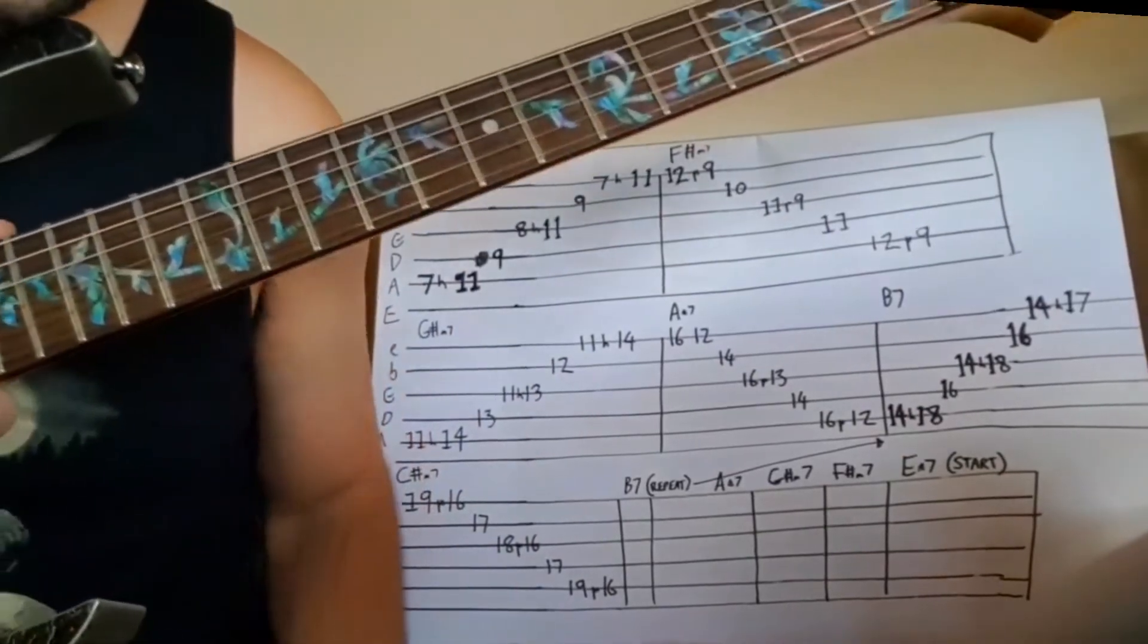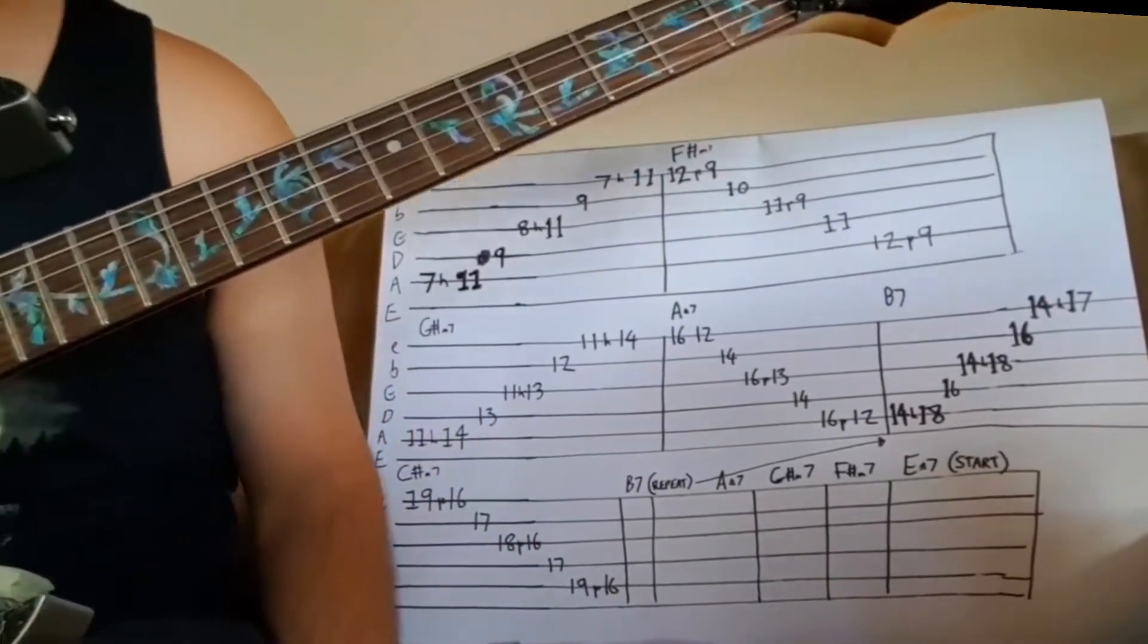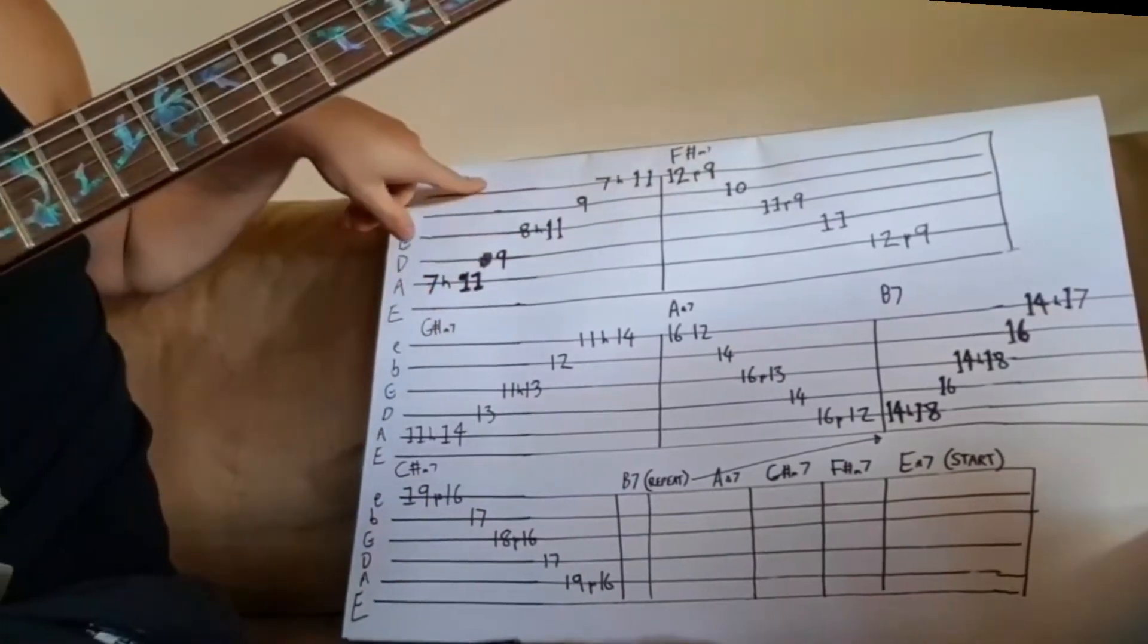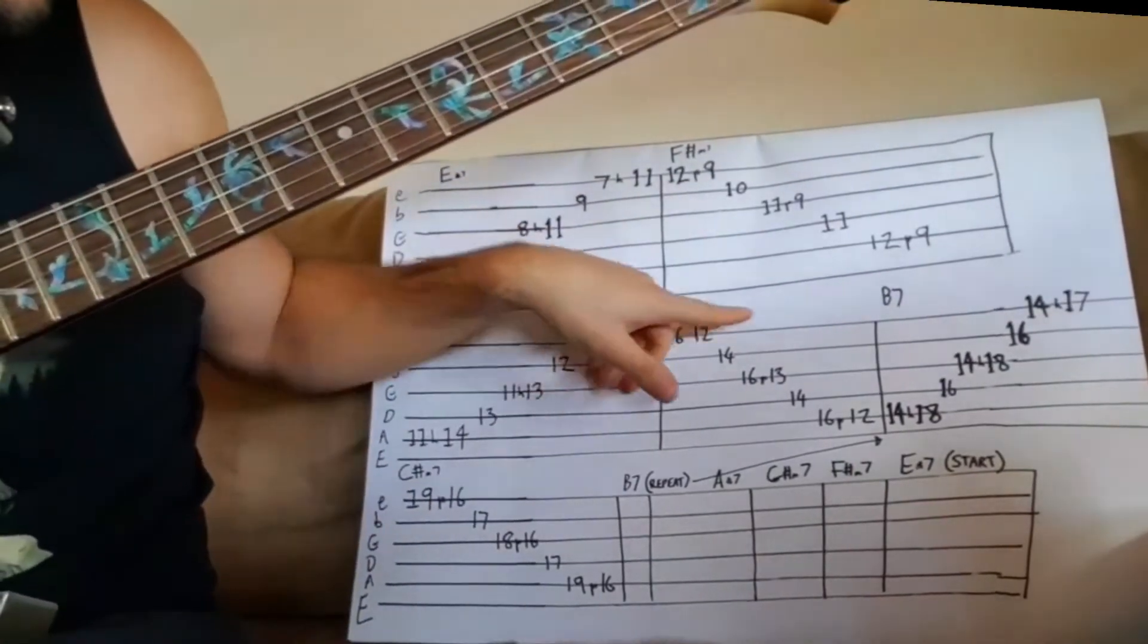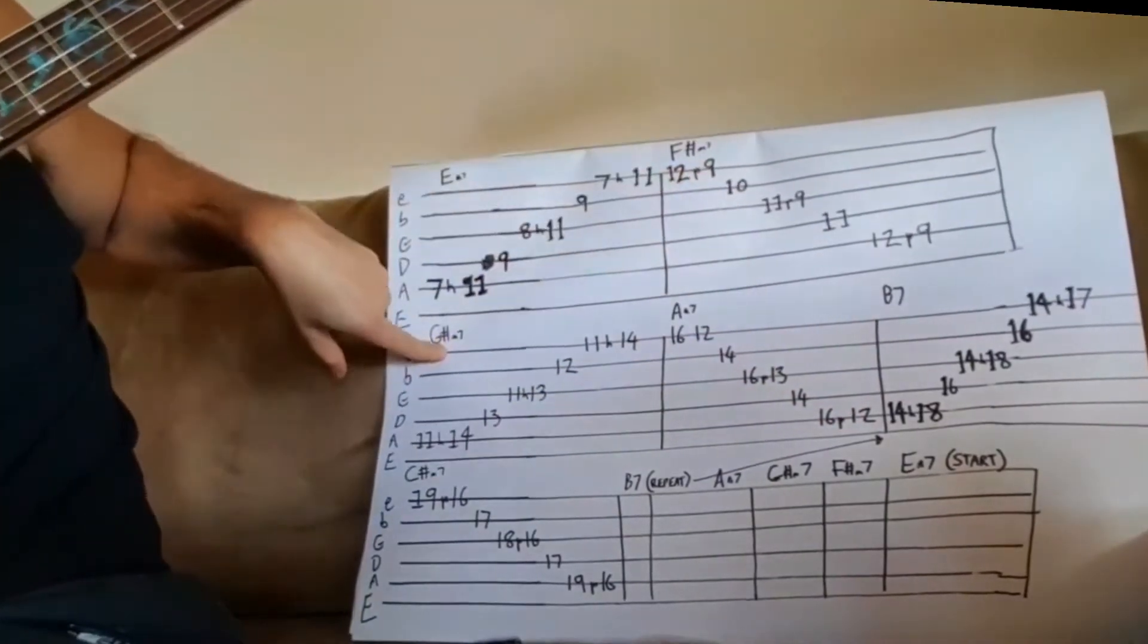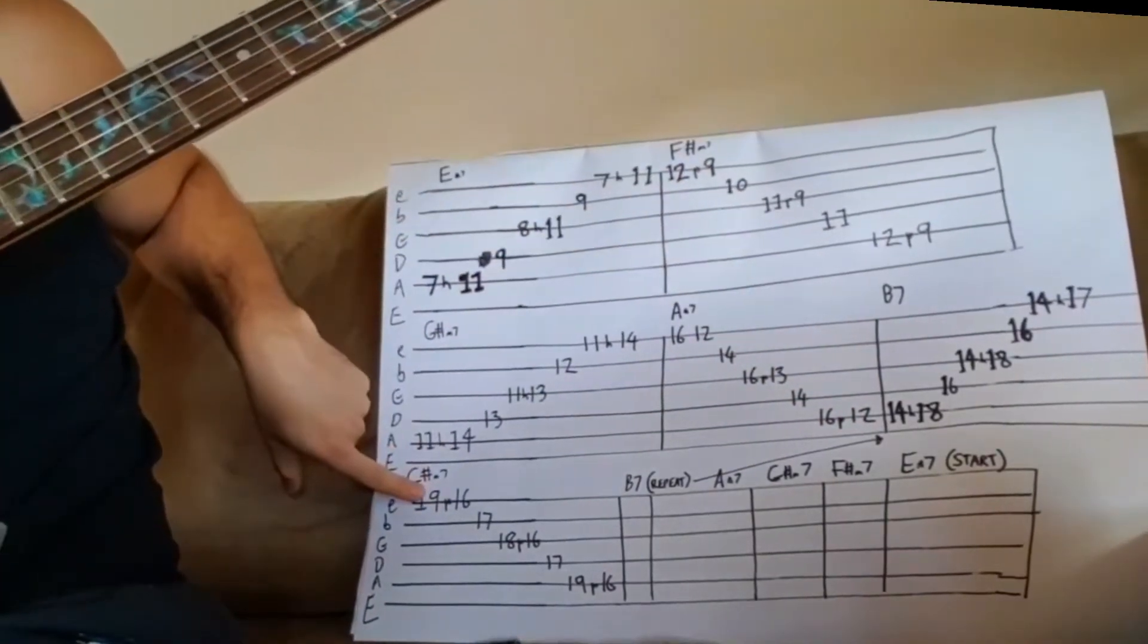So this is a great little exercise to cover all your major and minor arpeggios of the major scale. You've got E major 7, A major 7, B7, F sharp minor 7, G sharp minor 7, and C sharp minor 7.